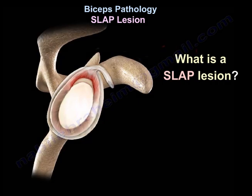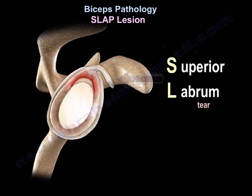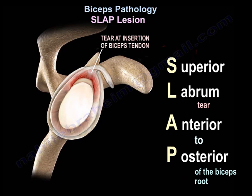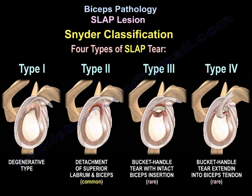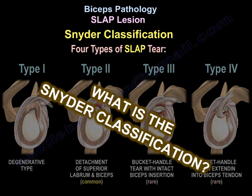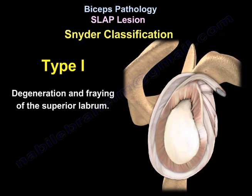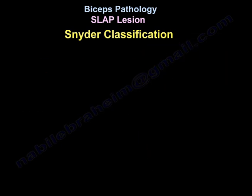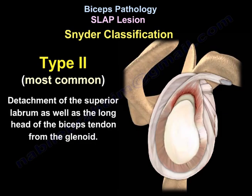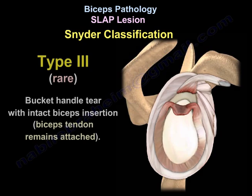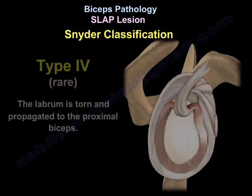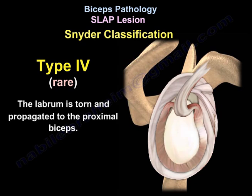SLAP means superior labrum tears from anterior to posterior. Snyder classification is types 1 to 4. Type 1: degeneration and fraying of the superior labrum. Type 2, the most common type: detachment of the superior labrum as well as the long head of the biceps from the glenoid. Type 3: a bucket-handle tear but the biceps root remains attached. Type 4: the labrum is torn and the tear propagates into the proximal biceps.